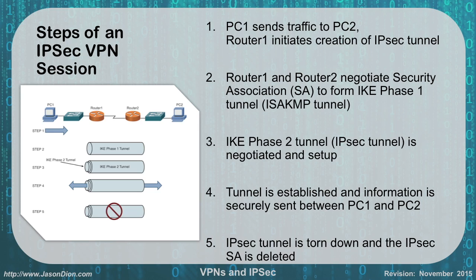Looking at the steps of an IPsec VPN session: first, our PC is going to send traffic to the second PC. The router is going to initiate the creation of an IPsec tunnel. Next, router one and router two are going to negotiate their security association — their SA — to form the phase one tunnel, also known as an ISAKMP tunnel. The phase two IPsec tunnel is then negotiated and set up, the tunnel is established, the information is securely sent between PC one and PC two, and at the end the IPsec tunnel will be torn down.